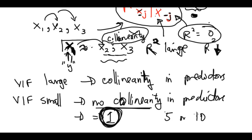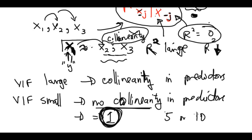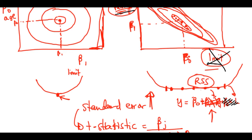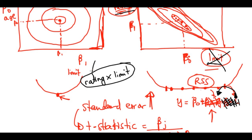After identifying collinear variables using the VIF, one solution is to drop them — because their information is already captured by the other variable. For example, if rating and limit are collinear, we can drop limit since its information is already captured by rating.